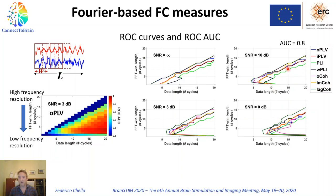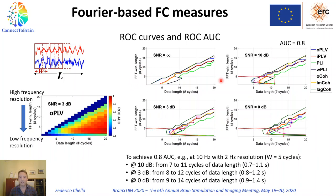These are the contour plots for the area under the curve obtained for all connectivity metrics. In this case, choosing a reference value of 0.8 and performing the analysis with 2 Hz resolution — requiring a 5-cycle window length — to achieve a 0.8 area under the curve I need a data length of 7 to 11 cycles at 10 dB, or 8 to 12 cycles at 3 dB, or 9 to 14 cycles at 0 dB. These are larger values compared to those observed with Hilbert-based connectivity metrics.